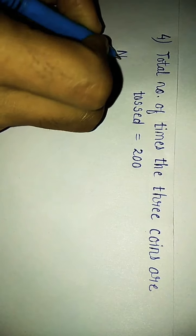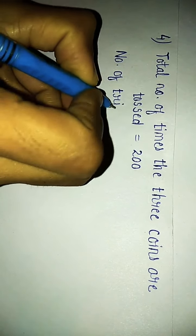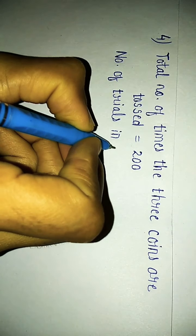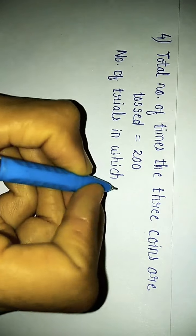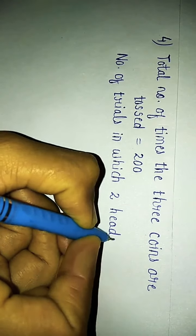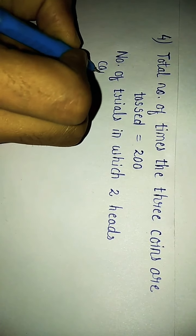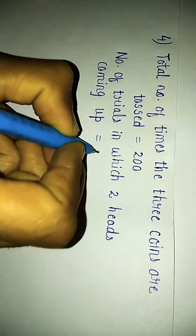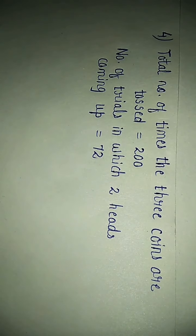Then, we have number of trials. What do we need to find? In which 2 heads come. So, number of trials in which 2 heads coming up. That are 72 times from the table.